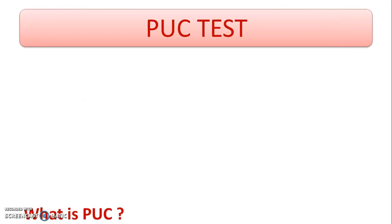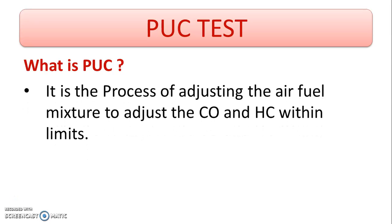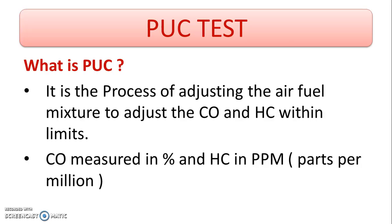The third test is the PUC test — Pollution Under Control test. It is the process of adjusting the air-fuel mixture to adjust the carbon monoxide and hydrocarbons within the limits. Carbon monoxide is measured in terms of percentage, and hydrocarbons are measured in terms of parts per million.